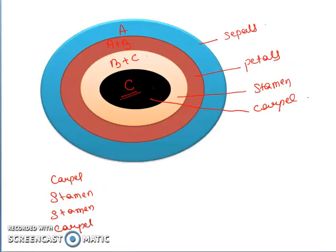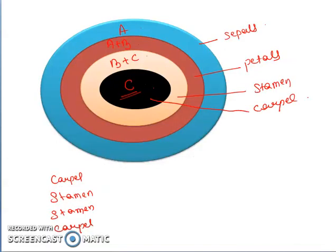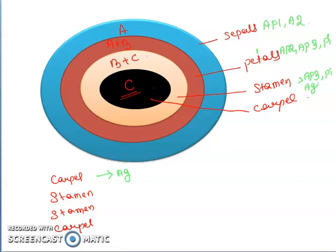According to the question, we have to find the loss-of-function mutation. We need to understand the concept of APETALA1, APETALA2, PISTILLATA, AGAMOUS, and APETALA3. For formation of sepals, we need AP1 and AP2. For petals, we need AP2 from class A and AP3 and PISTILLATA from class B. For stamen, we need AP3 from class B, PISTILLATA, and AGAMOUS. For carpel, we need AGAMOUS. So we must find which gene loss causes carpel, stamen, stamen, and carpel.